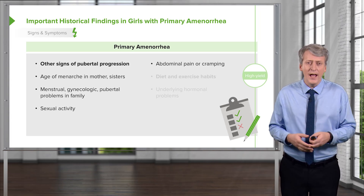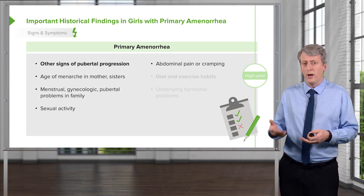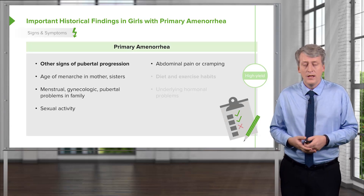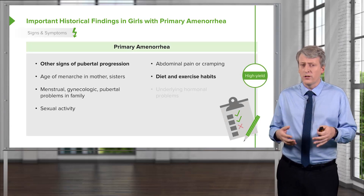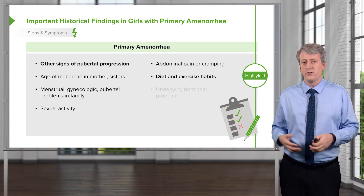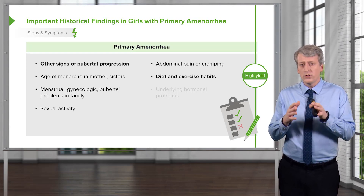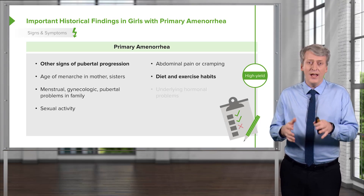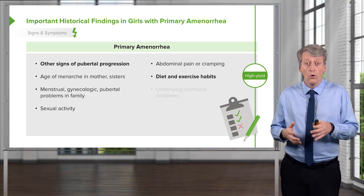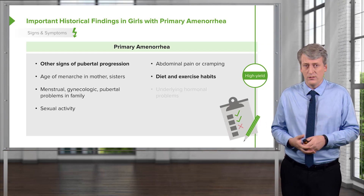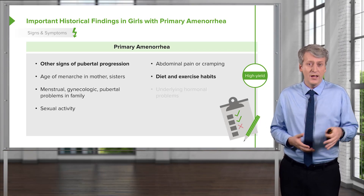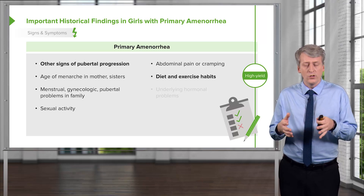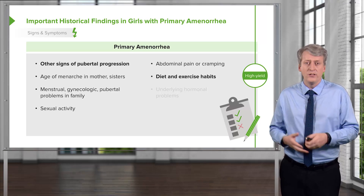We should ask if the patient has abdominal pain or cramping — this is how an imperforate hymen would present. It's critical to ask about diet and exercise habits. One of the most common causes of primary amenorrhea is an excessive or competitive exercise routine, excessive dieting, or simply being a very thin girl. These are all reasons why girls may have a delay in the onset of their menses.